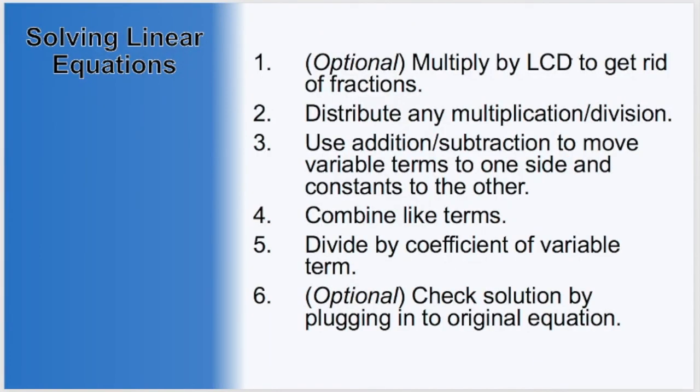To wrap up, here are the guidelines we discussed in order to solve linear equations. First, if we have fractions, multiply by our least common denominator to get rid of them. Second, distribute any multiplication or division. Third, use addition and subtraction to move variable terms to one side and constant terms to the other side. Fourth, combine any like terms. And five, divide by the coefficient of the variable term. At this point, we will have solved the equation and gotten our variable equals a number. Finally, we could check that solution by plugging in that value into our original equation. Until next time.